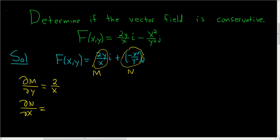And then ∂N/∂x - we're treating -1/y² as a constant, so this is -2x/y². So clearly these are not equal.